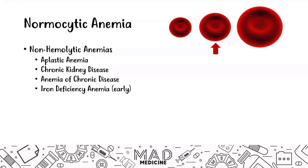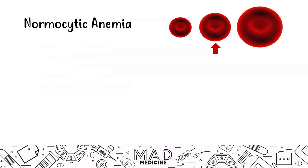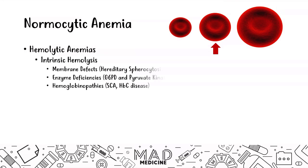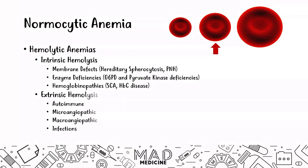Non-hemolytic anemias include aplastic anemia, chronic kidney disease, anemia of chronic disease, and early iron deficiency anemia. We will talk about all these in depth. Hemolytic causes of anemias are numerous — this is probably the most extensive portion when it comes to step one. Spend a good amount of time on all of these hemolytic anemias.